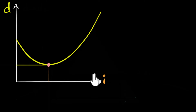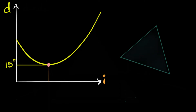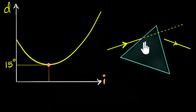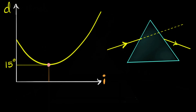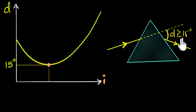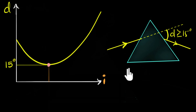So what does that mean? Let's take an example. If that minimum value is, say, 15 degrees, then if we take our prism and shoot a ray of light through it, regardless of the angle of incidence — regardless of how the prism is oriented — we know for sure that the angle of deviation has to be greater than or equal to 15 degrees. It cannot be smaller than 15 degrees. 15 is just an example — that is the key takeaway.